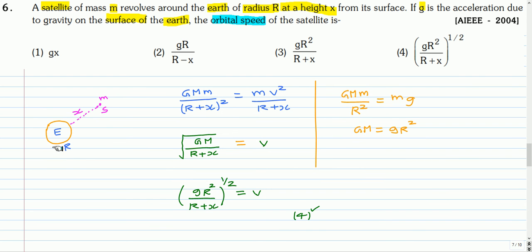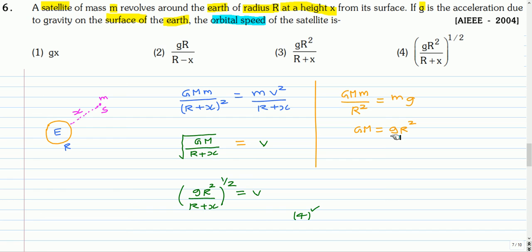Here is the solution. The satellite is at distance x from Earth's surface, so from the center of Earth it is at distance r + x. The gravitational force GMm/(r + x)² equals the centripetal force mv²/(r + x). From this we get v = √(GM/(r + x)). At Earth's surface, GMm/r² = mg, so GM = gr². Substituting, v = √(gr²/(r + x)) = r√(g/(r + x)). This matches option four.